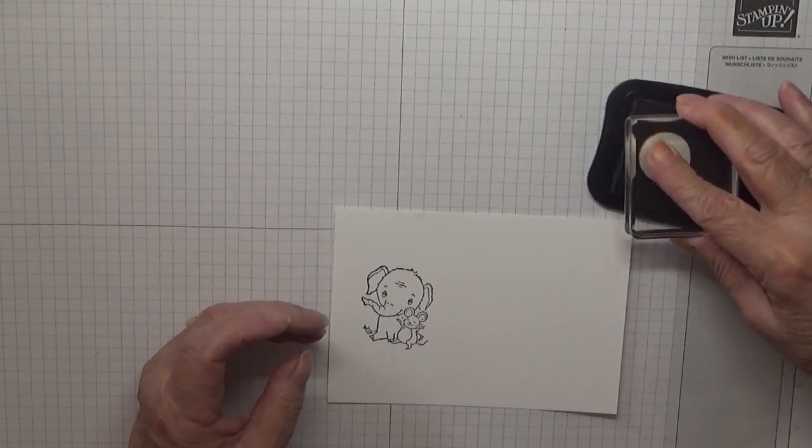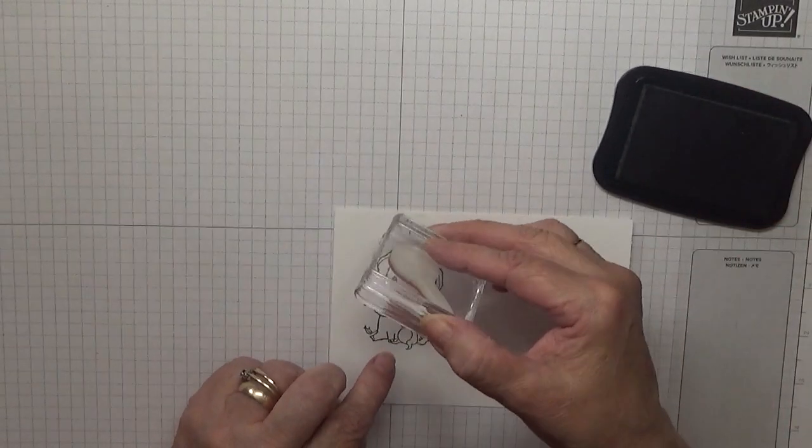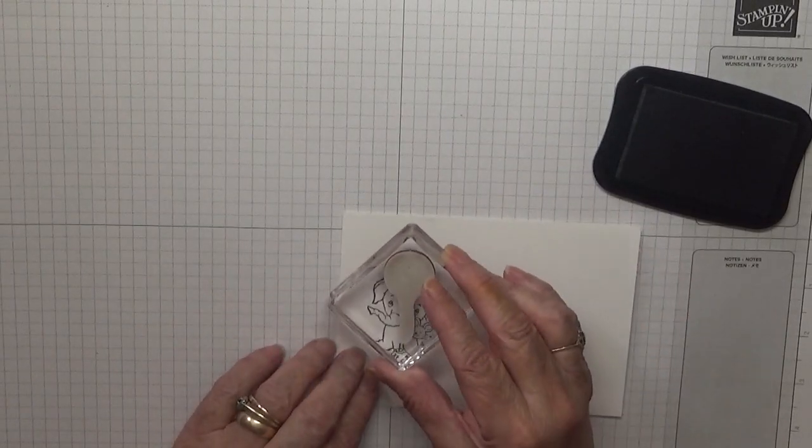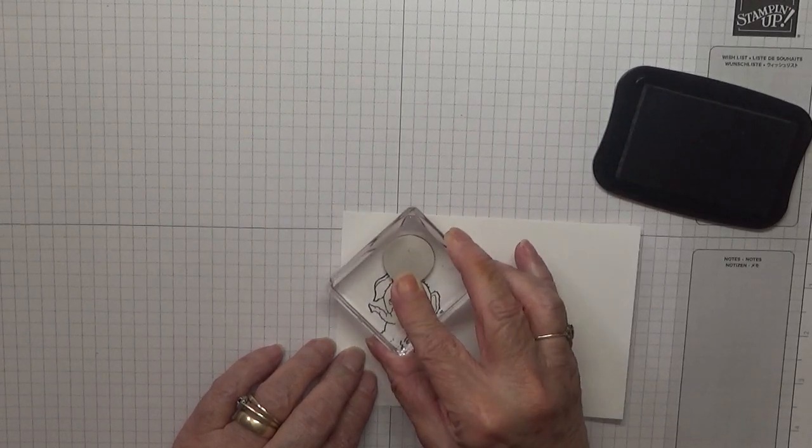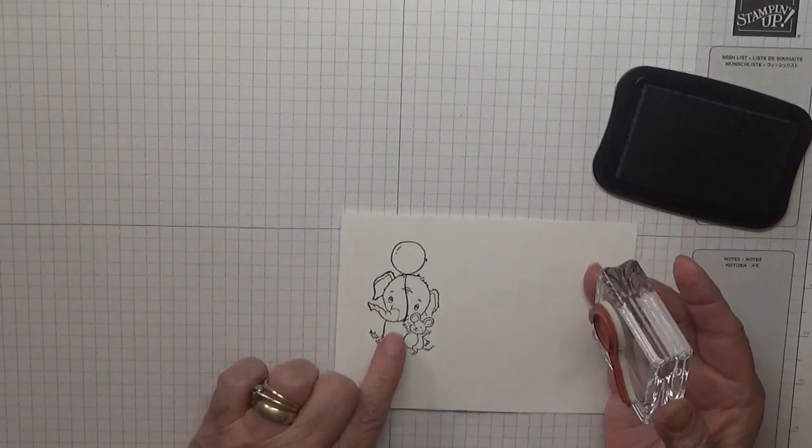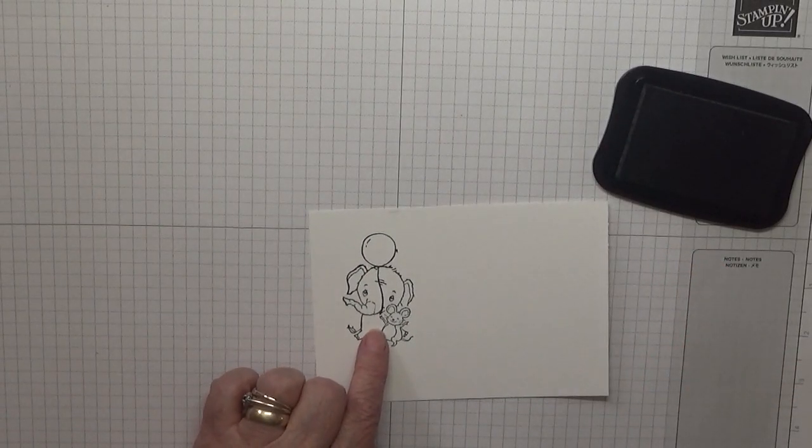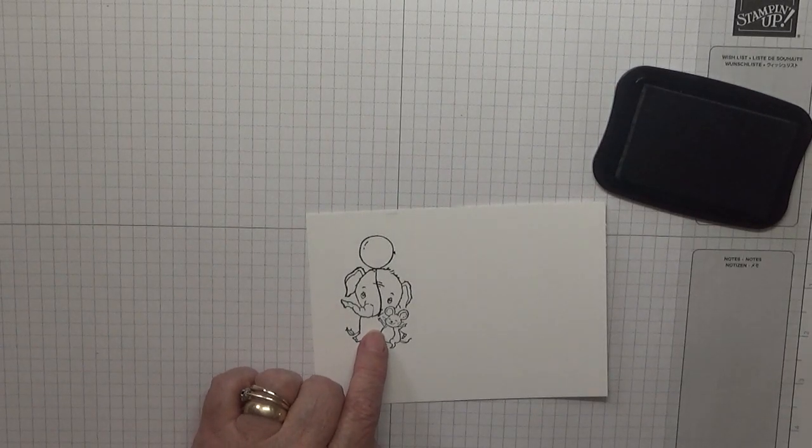Now, this is the tricky bit. It's trying to get the string of the balloon in this little mouse's hand, and we do want it to go above the elephant. Right, I've missed the mouse's hand, but that can be fixed by using a pen.